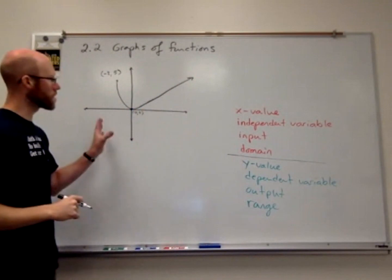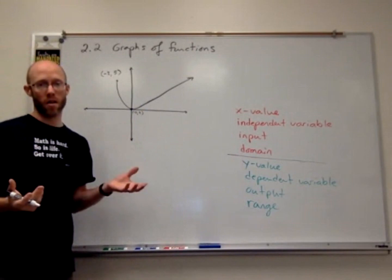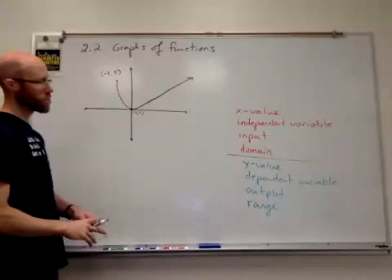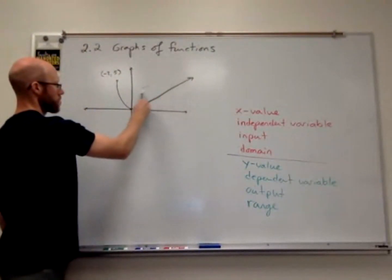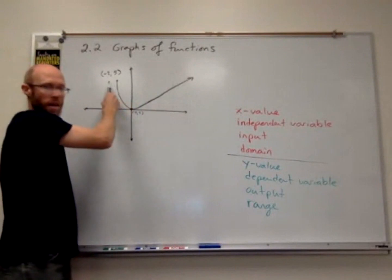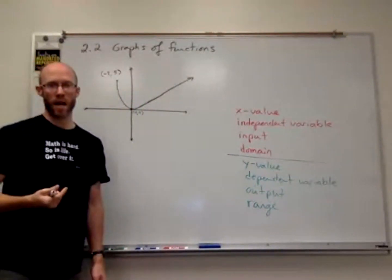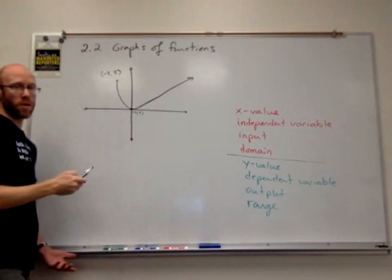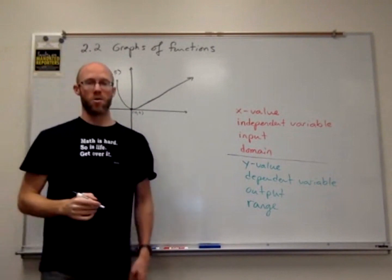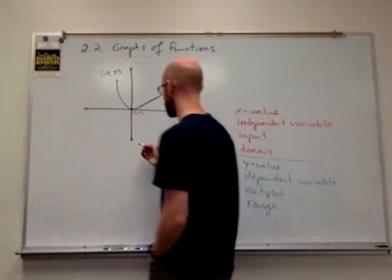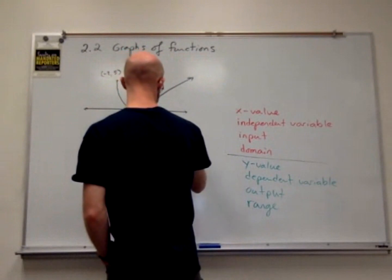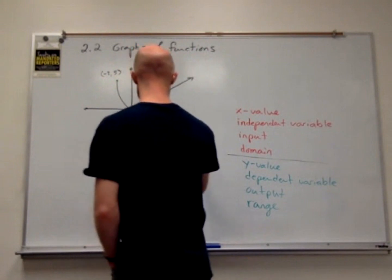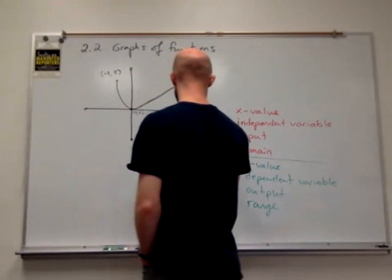From this graph we can identify several things. First, is this a function? Using the vertical line test — every vertical line I draw always crosses the graph one time, or zero times out to the left, and that's okay. So we would say this is a function because it passes the vertical line test.